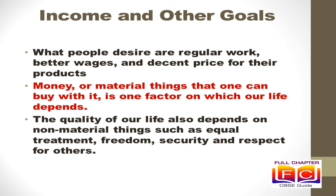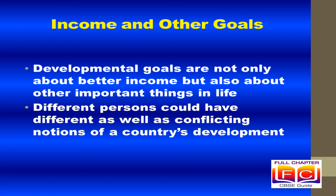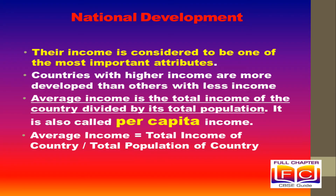While averages are useful for comparison, they also hide disparities because they do not tell us how income is distributed among people. People's desires are regular work, better wages and decent price for their crops or other products. Besides seeking more income, people also seek things like equal treatment, freedom, security and respect of others. When we think of a nation or a region, besides average income, public facilities are equally significant attributes.